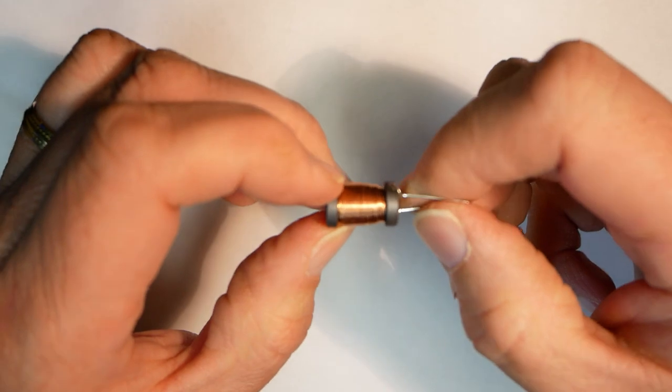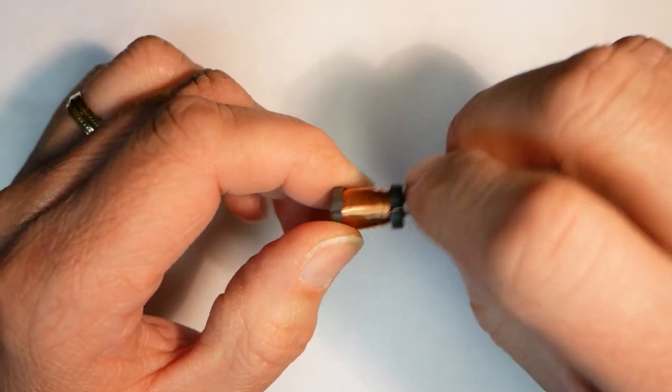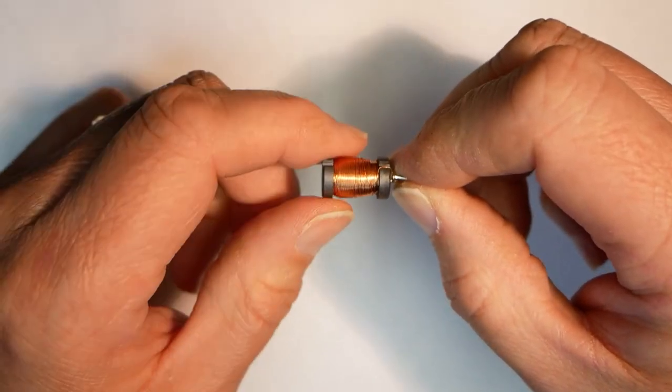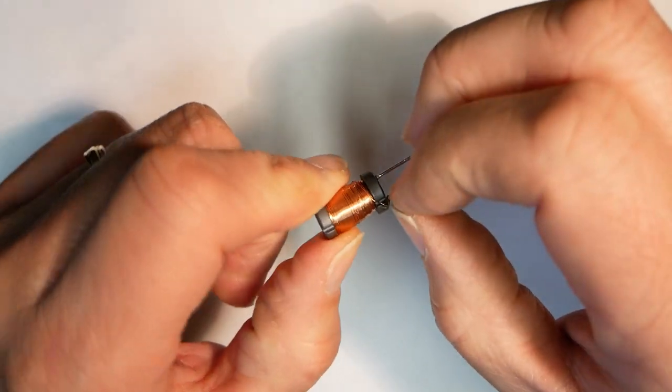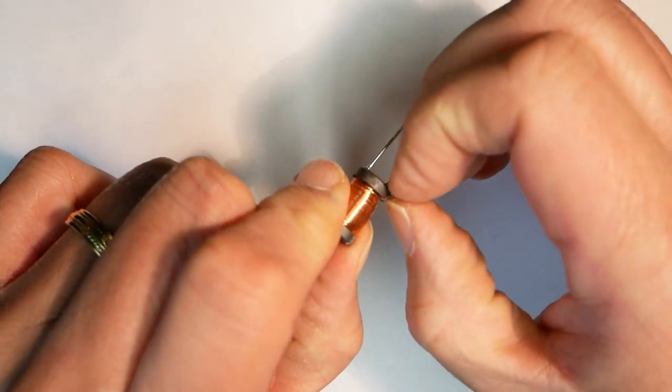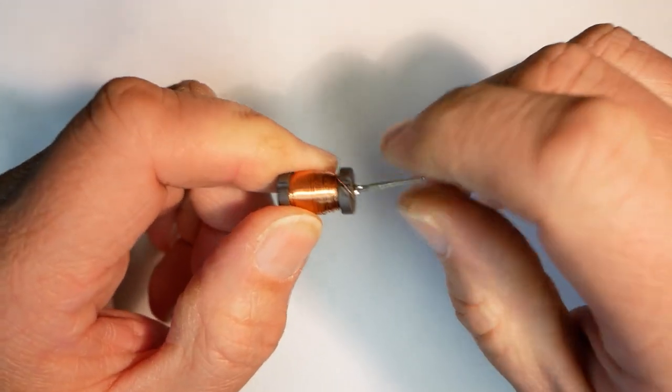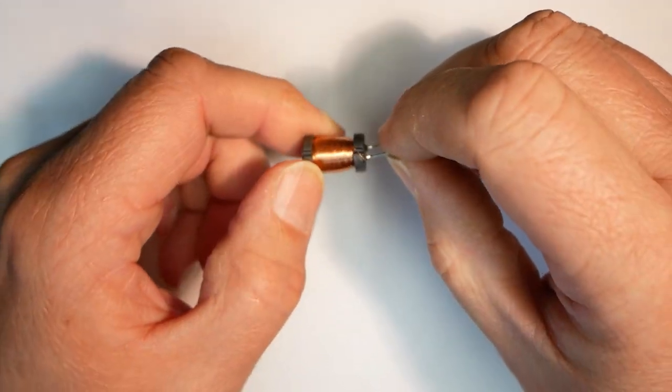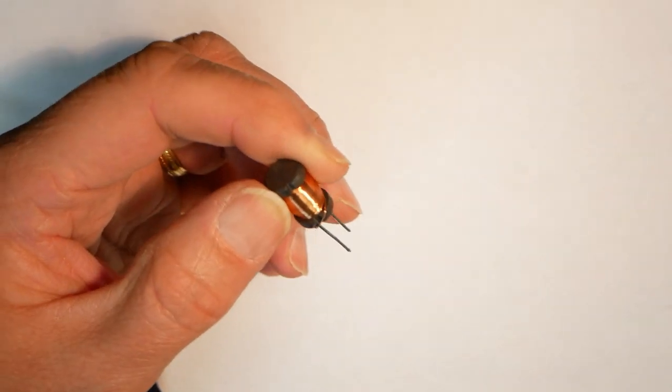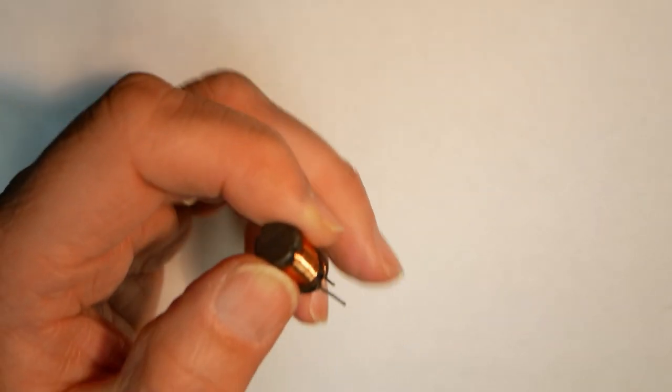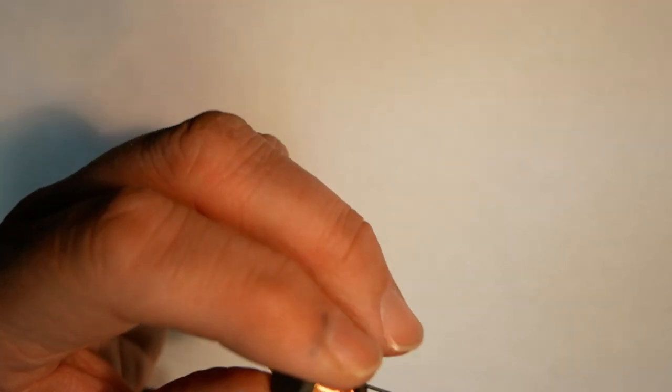And then here's the actual inductor. And then what it is, is it's a ferrite core, wound with lots of wire. So, if you would think that if this is 10 mH, then if you think a 1H coil would be quite bulky. So, let's see if I can actually show the wire in this case.